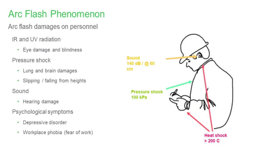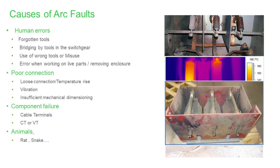What are the effects of these faults on the bodies of humans working nearby? There will be infrared and UV radiation, which could damage eyesight and lead to blindness. There will be pressure shocks that can damage the lungs and brain. Falling from heights is another cause of injury. Sound waves will damage hearing. And lastly, psychological symptoms like depressive disorder or workplace phobia. These are the effects on humans.